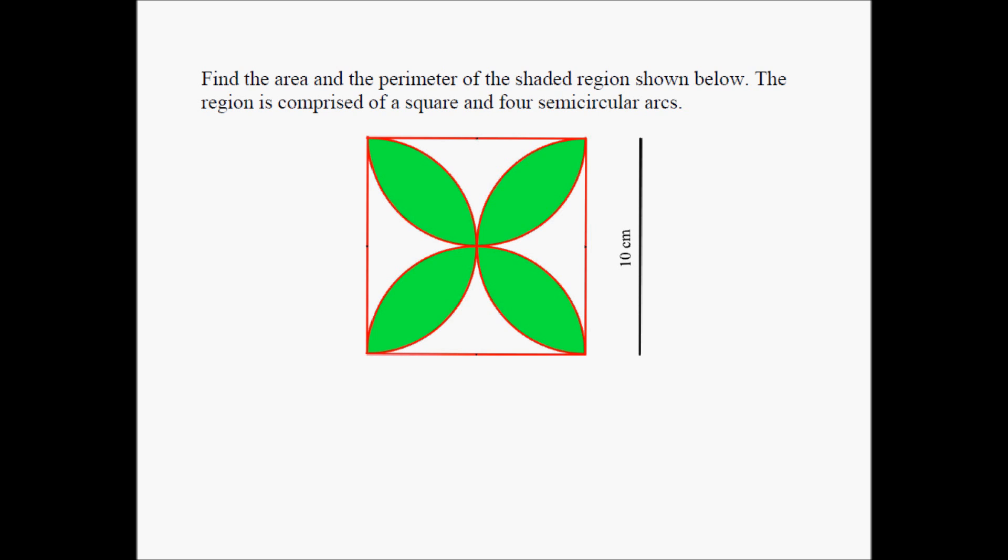It's a geometry problem, looks fairly complicated. We are supposed to find the area of the shaded region, which is basically four green petals, and these four petals are made out of four semi-circular arcs, and the four petals are inside a square whose length is 10 centimeters. So we have to find the area and the perimeter of the shaded region. It's a good idea to pause the video at this point in time and try to solve it on your own, but the solution follows.